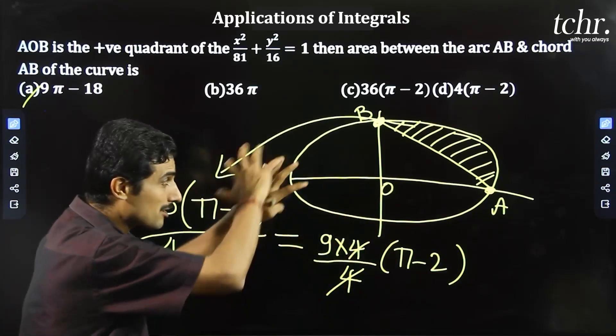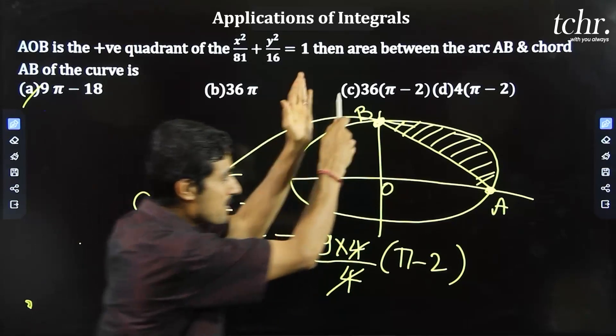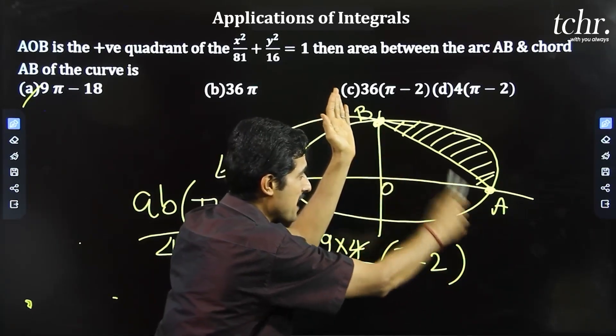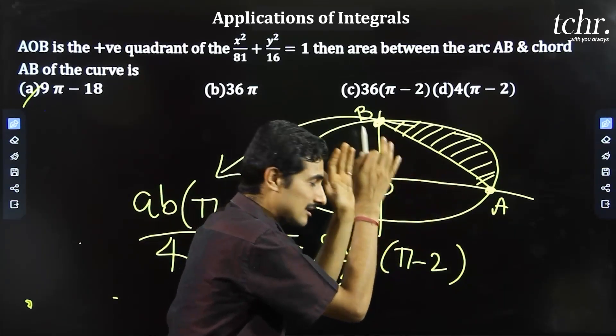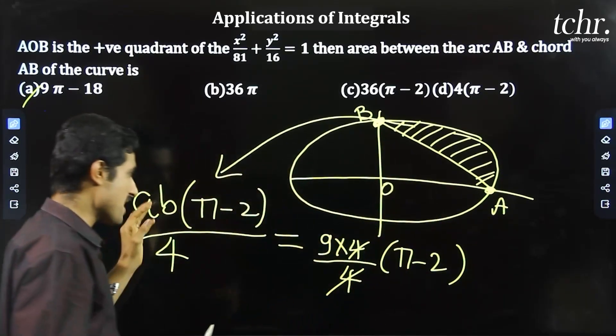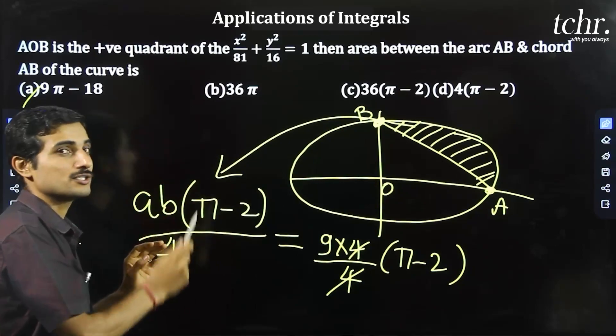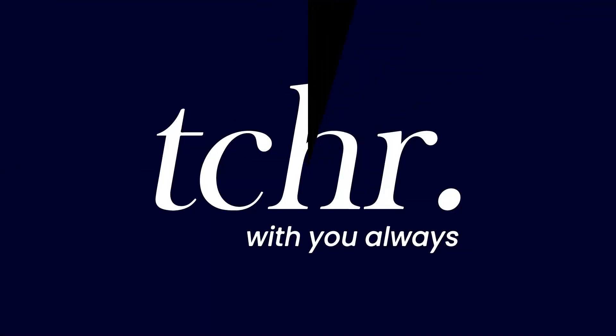So you know the shortcut. Chord AB and arc, area between: a b into pi minus 2 divided by 4. I got immediate conclusion.